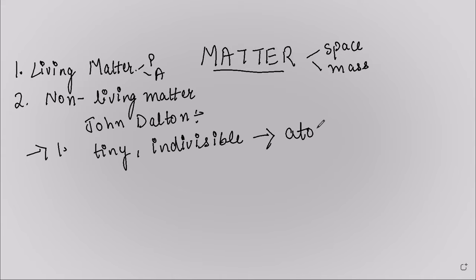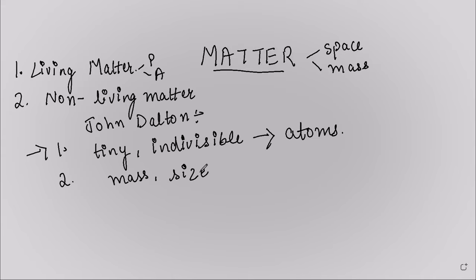The second postulate given by John Dalton is that all atoms of a specific element are identical in mass, size, and other properties as well, where the atoms of different elements exhibit different properties and also vary in mass and size.